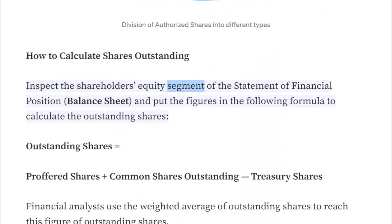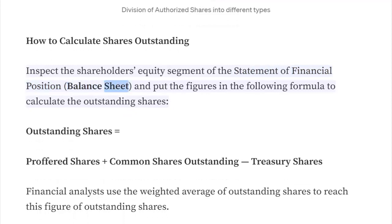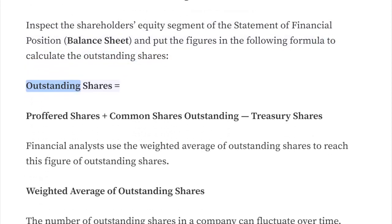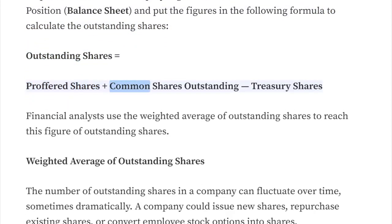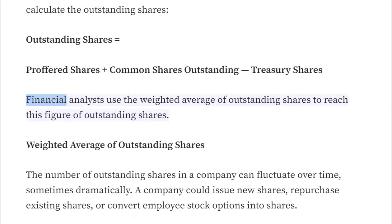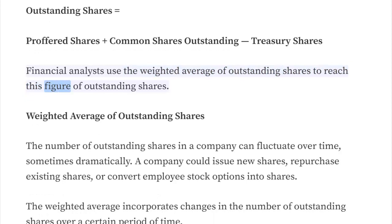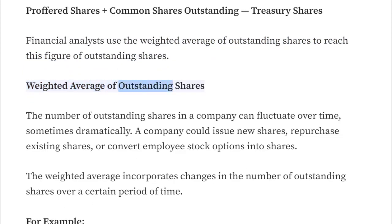To calculate shares outstanding, inspect the shareholders' equity segment of the statement of financial position (balance sheet) and apply the following formula: outstanding shares equals preferred shares plus common shares outstanding minus treasury shares. Financial analysts use the weighted average of outstanding shares to arrive at this figure.